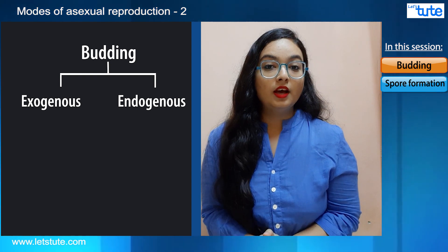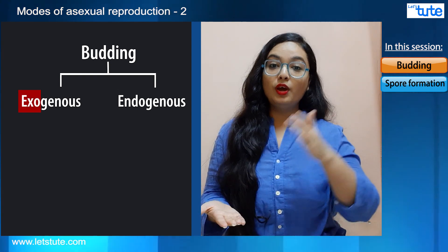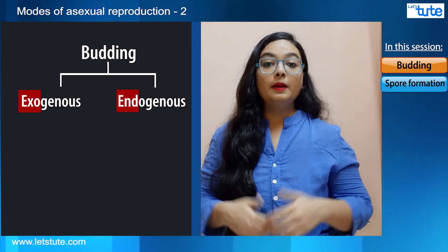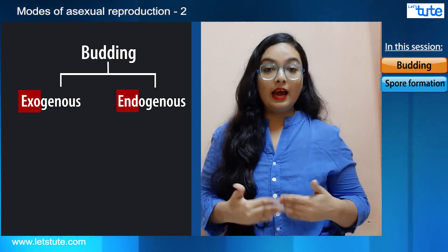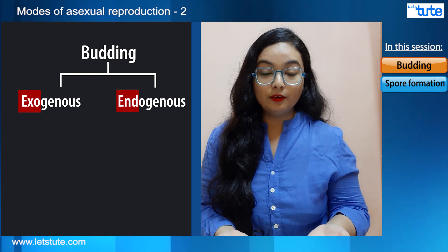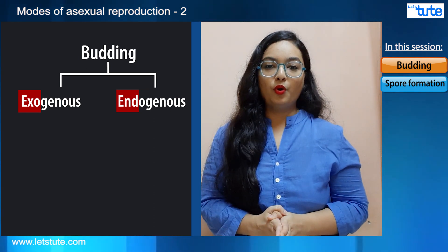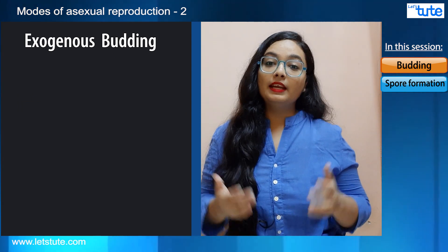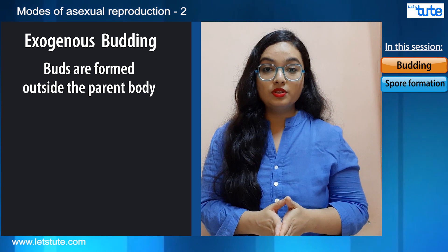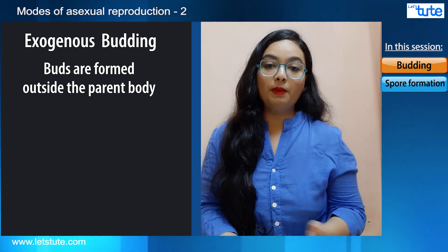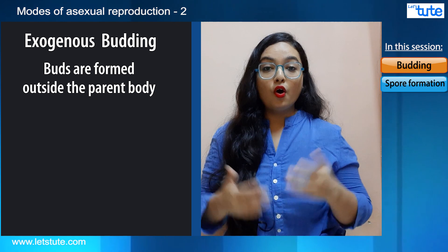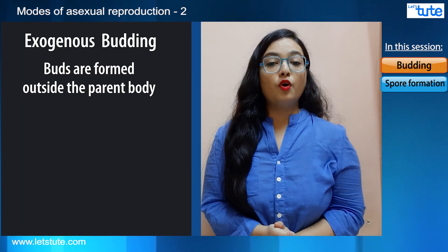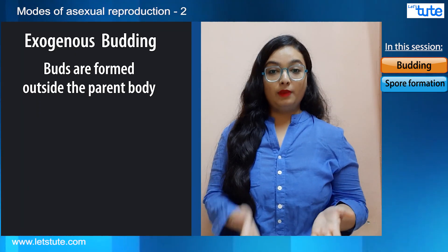Budding is of two major types: exogenous budding and endogenous budding. In exogenous budding, as the name suggests, the buds or outgrowths are formed on the outside of the parent body. A wonderful example of an organism showing this type of budding is Hydra. Another example of an organism undergoing exogenous budding is Sycon, which is a type of sponge.